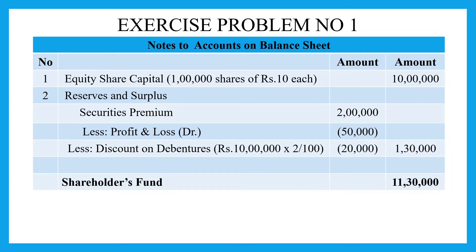In the problem, we will prepare our profit and loss account. First, we calculate shareholders' fund. Equity share capital is ₹10,00,000 and issue is ₹10,00,000. Reserves and surplus: security premium is ₹2,00,000. On the debit side, that is a loss, so we will deduct ₹50,000. And discount on debentures — ₹5,00,000 at 2% is ₹20,000. From ₹2,00,000, deducting ₹70,000, we get ₹1,30,000. So the shareholders' fund value is ₹11,30,000.